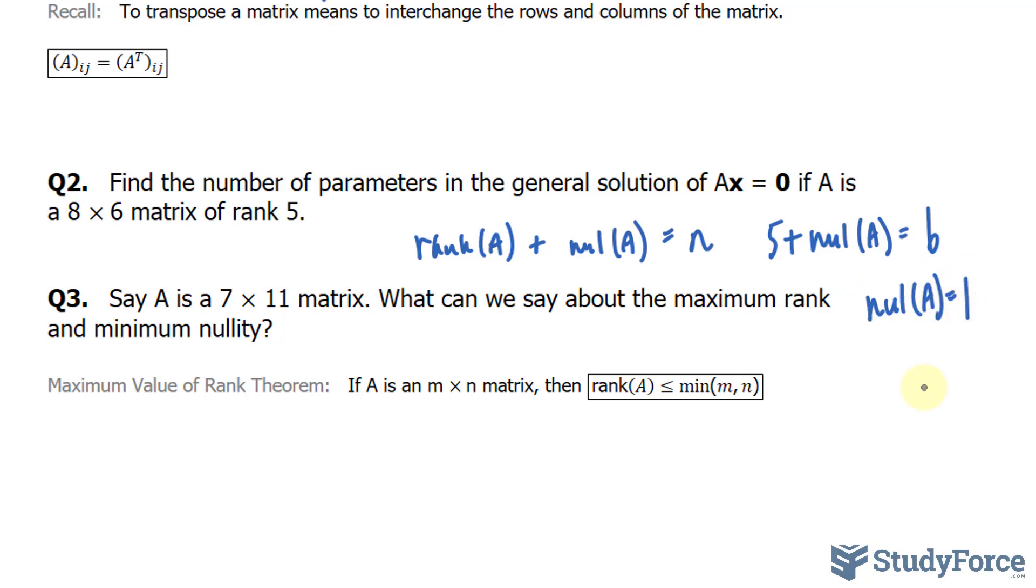Finally, let's say we have a matrix that's 7 by 11. What can we say about the maximum rank and minimum nullity? For this, you'll need to know the maximum value of a rank theorem, which states that if a matrix A is an m by n matrix, then the rank of that matrix can never exceed the minimum of m and n.